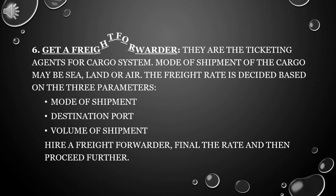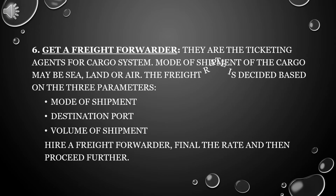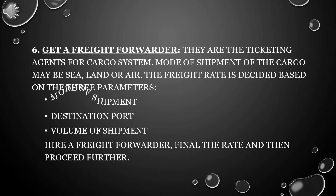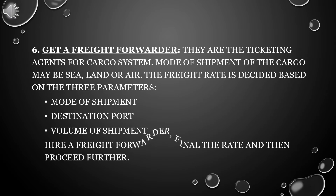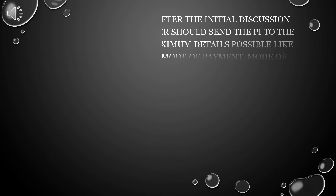Sixth, get a Freight Forwarder. They are the ticketing agents for the cargo system. The mode of shipment of the cargo may be sea, land, or air. The freight rate is decided based on three parameters: first, mode of shipment; second, destination port; and third, volume of shipment. Hire a freight forwarder, finalize the rate, and then proceed further.